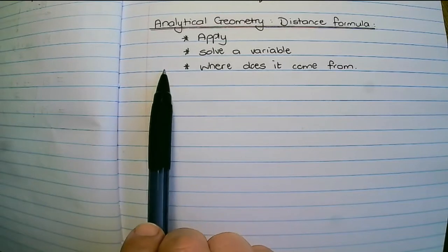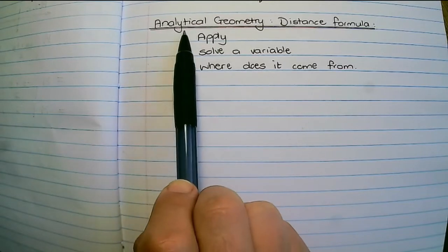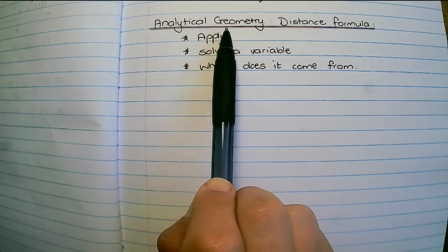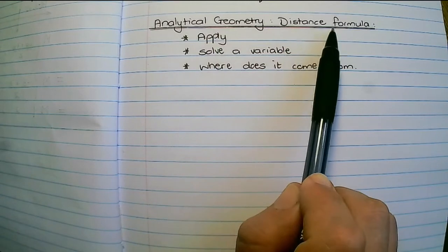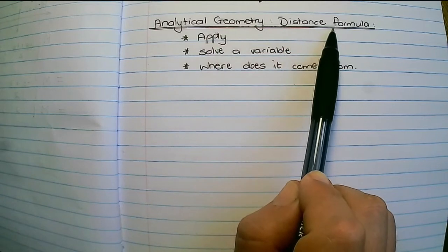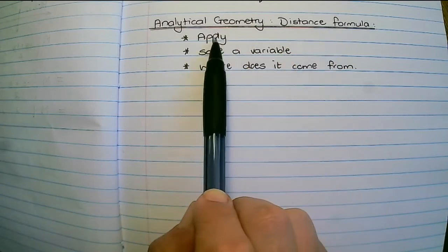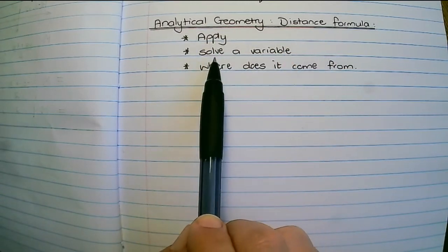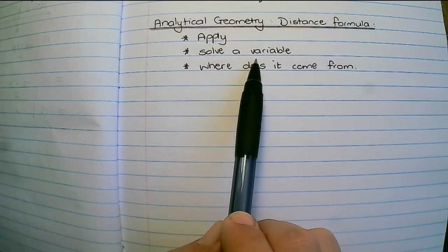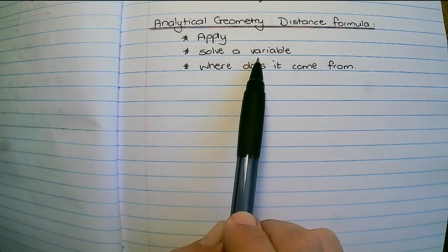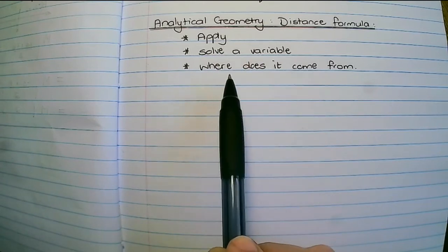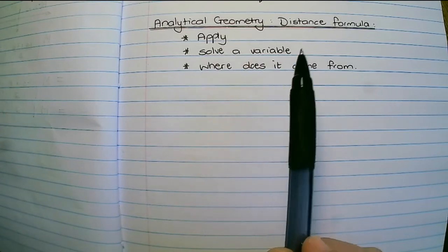In this video we will continue with analytical geometry and we will discuss the distance formula. I'll show you how to apply it, how to solve for a variable when a coordinate is missing, and also where the formula comes from.